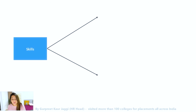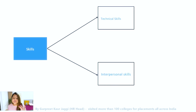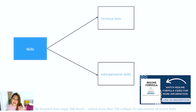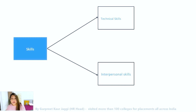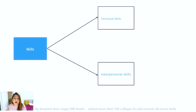The skills section is very important — it can make or break the deal for you. Focus on both technical skills and interpersonal skills. For technical skills, mention everything you've learned in your curriculum. For example, for a Computer Science Engineering student, list programming languages such as Java, C, C++, databases like Oracle and MS SQL, and operating systems like Linux and Windows. This section can be in tabular or text format, but make sure to highlight important keywords and skills.